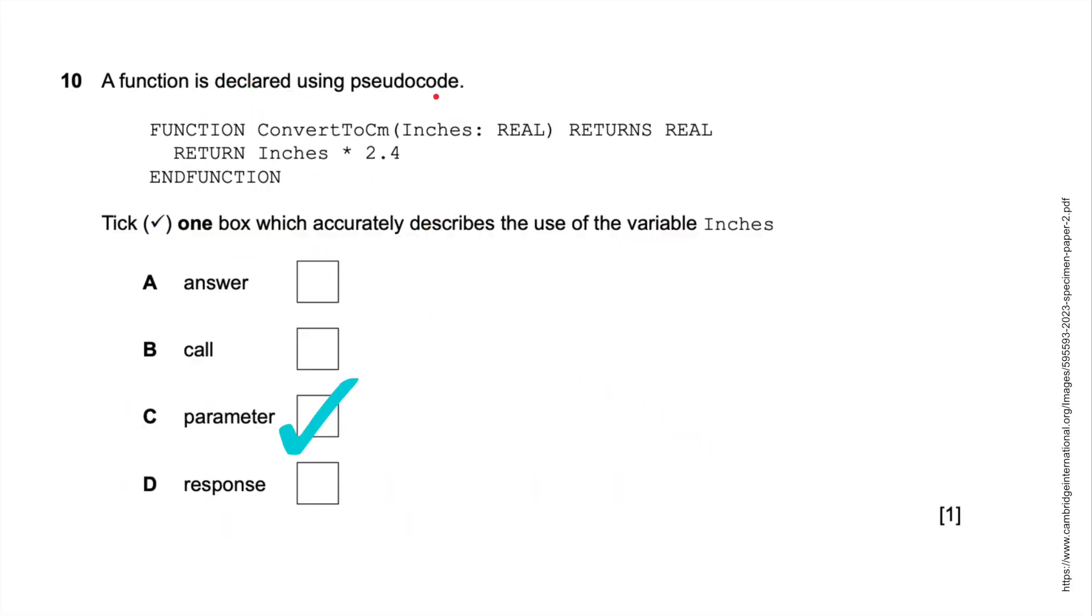A function is declared using pseudocode function convert to centimeters, inches. Real number returns a real value, returns inches times 2.4, end the function. One box which accurately describes the use of the variable inches. It is a parameter. It's what we're going to type in. It's what's going to be used. Parameters. It's set to real. That's the parameter. And then it would get converted using this little thing here, using the times 2.4. So it would be a parameter.